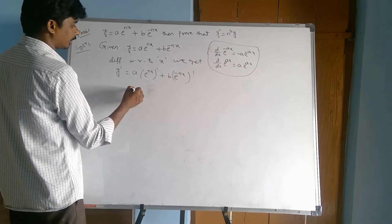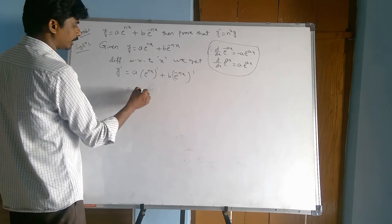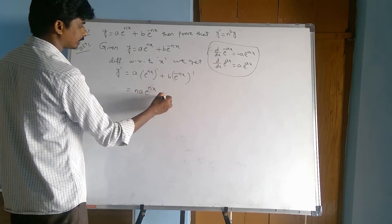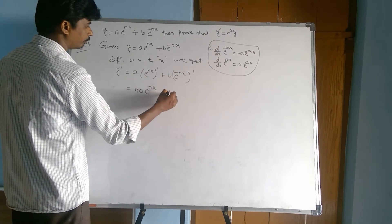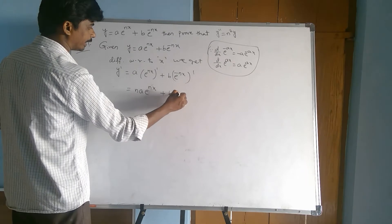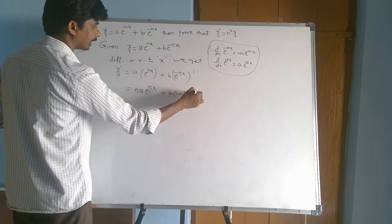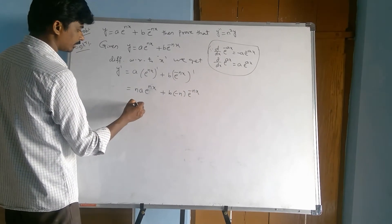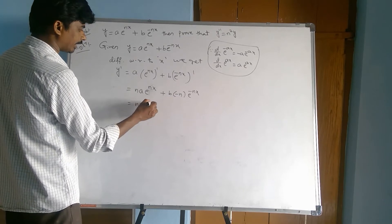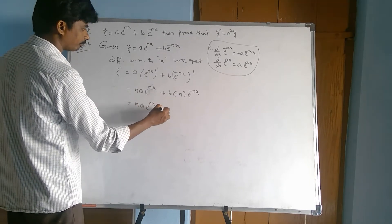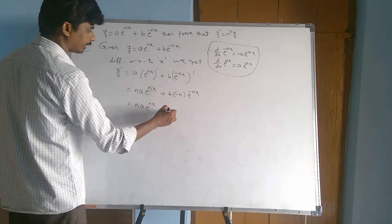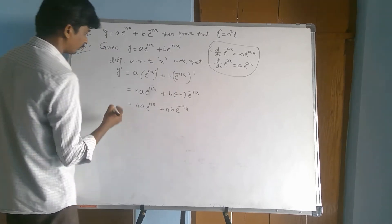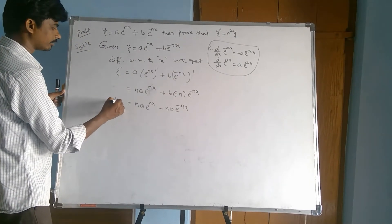y dash equals n into a e power nx plus b into minus n into e power minus nx. This is y dash.